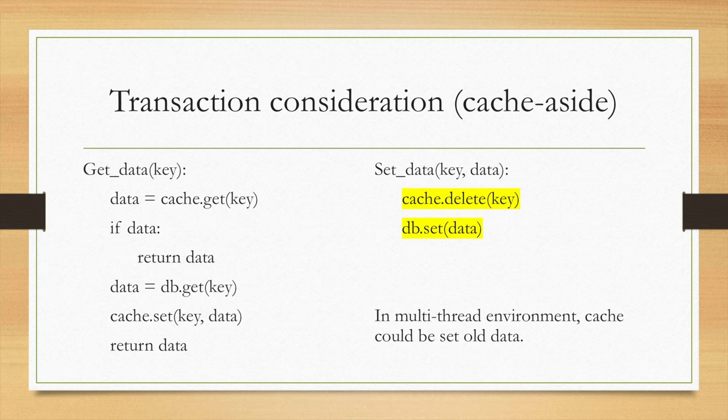Another consideration is how cache is used in the transaction. Let's explore the cache aside example. Usually we need to get data, and first we query the cache. If there's no data in the cache, we will query the database and then put the data into the cache. For the set, we need to clear the cache. There are two ways. One way is, like this example, we first delete the cache, and then set the data into the database.